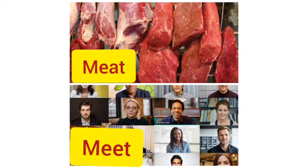Next: meat — M-E-A-T — and meet — M-E-E-T. Both sound the same. M-E-A-T means flesh — the flesh of an animal or bird. M-E-E-T means meeting; when we meet someone, that is called meet. Both words are different in spelling and meaning but sound the same.